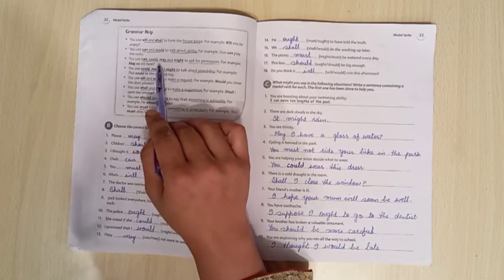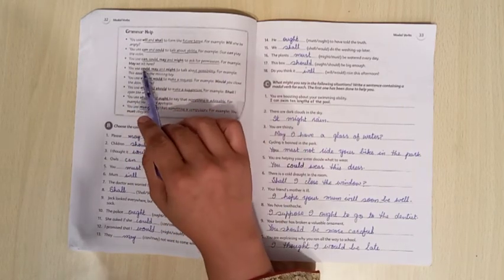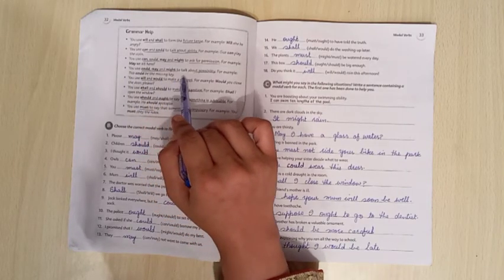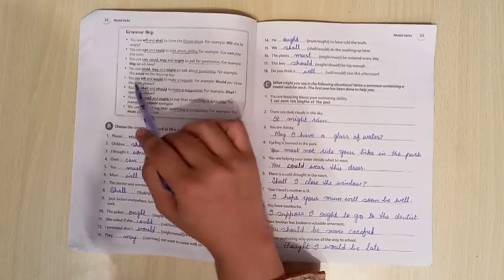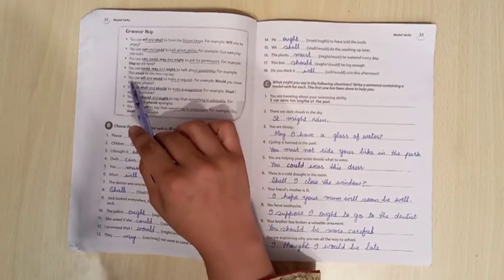You use can, could, may, and might to ask for permission. For example, may we sit here. You use could, may, and might to talk about possibility. For example, this could be missing key.